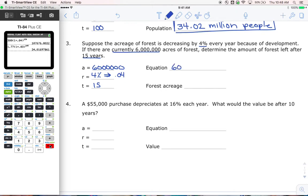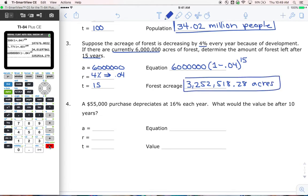So my equation here is going to have 6 million, and we're going to have one, and then we got a plus or a minus - what's it going to be? It's got to be minus. We're decreasing, the forest is decreasing. So we're going to have minus 0.04 to the power of T, which in this case is 15. So what does this give us? 6 million, and we got one minus 0.04 to the power of 15. This looks like 3,252,518.28 acres. So it was 6 million, it's decreasing, now it's a little over 3 million. That seems like it's a reasonable answer.